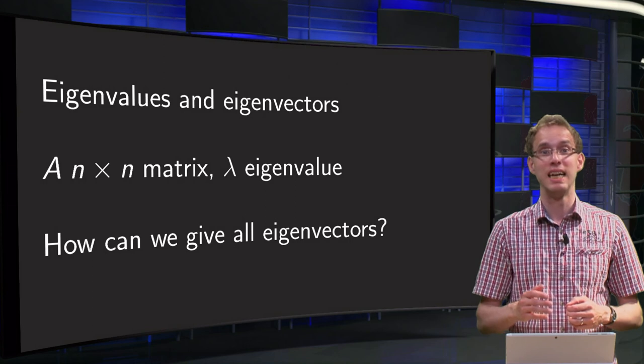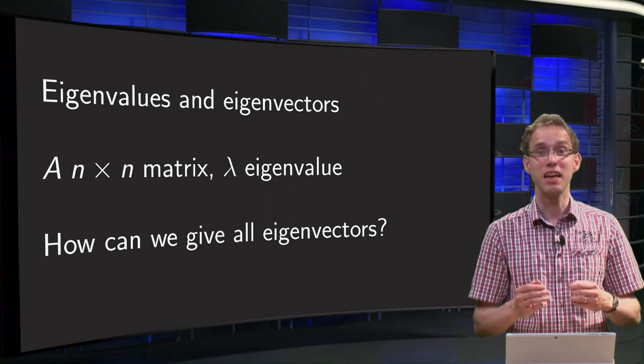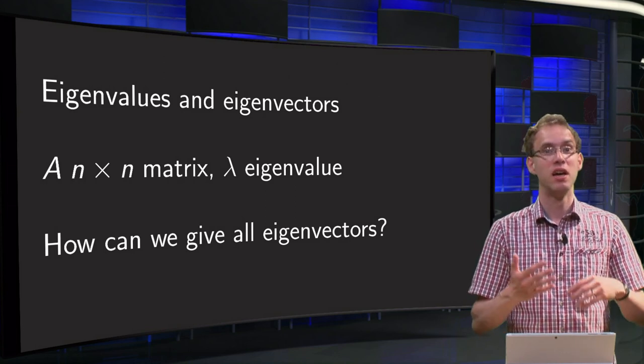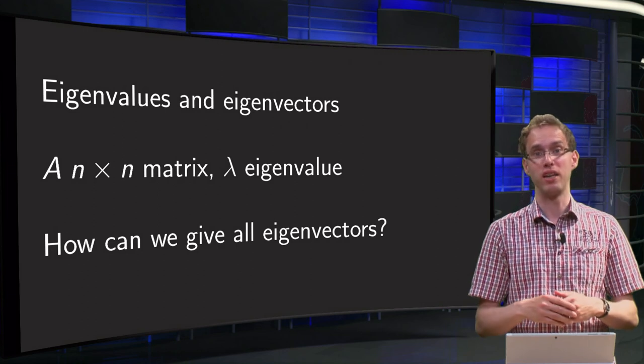If a matrix has an eigenvector, then it immediately has infinitely many eigenvectors. How can we give all eigenvectors of a matrix?